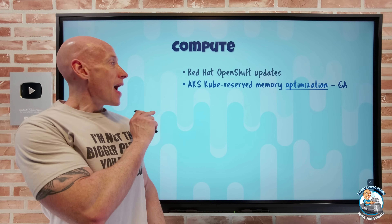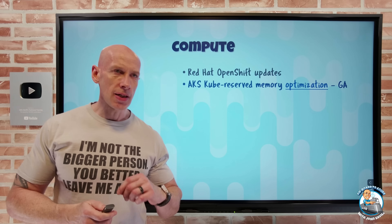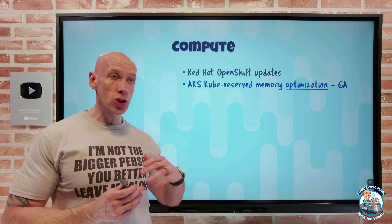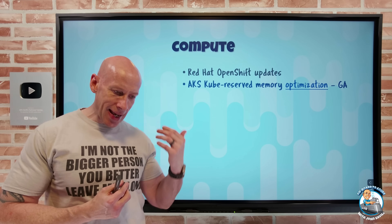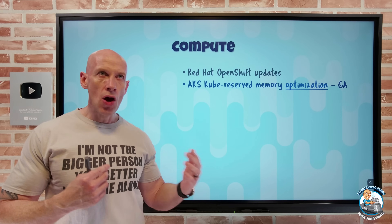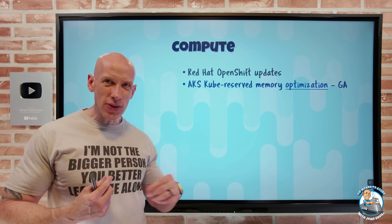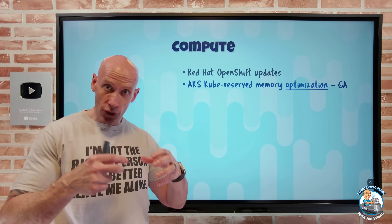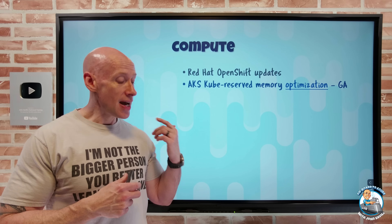The Azure Kubernetes Service kube-reserved memory has been optimized. I talked about this before, but it's now gone GA. With version 1.29 and later, there's been a huge reduction in the amount of reserved memory, freeing up more memory for other workloads. It still has to reserve a certain amount for the core containers needed for Kubernetes components itself, but it has reduced that.